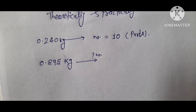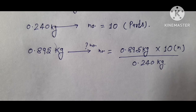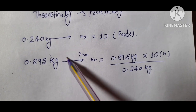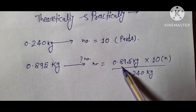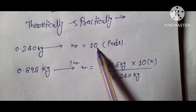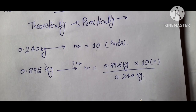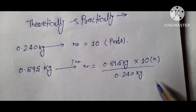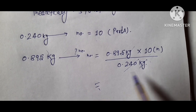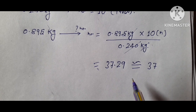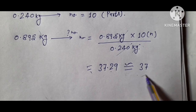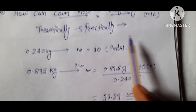The number of parts we calculate theoretically: we are interested to find out the total number of parts. We multiply this value — 0.895 kg multiplied by 10 number of parts, and divide by 0.24 kg. The units will cancel out, and after calculating, we get the number of parts as 37.29, which is approximately 37 parts that we are putting in the weighing machine.